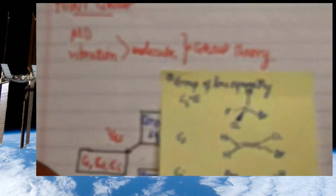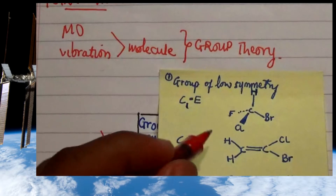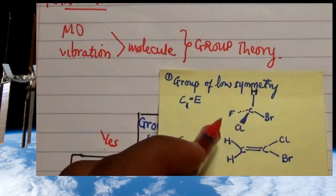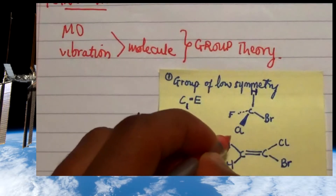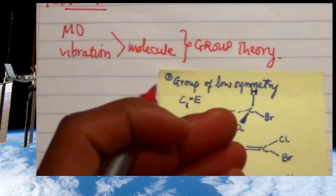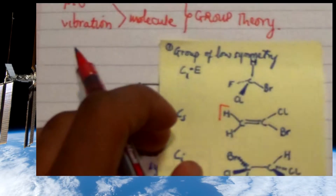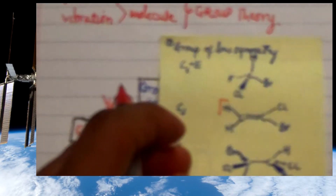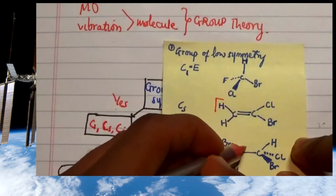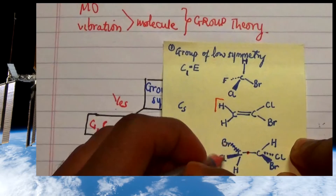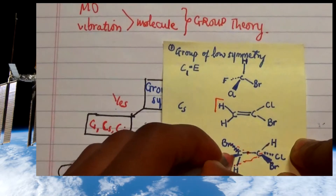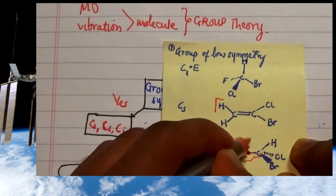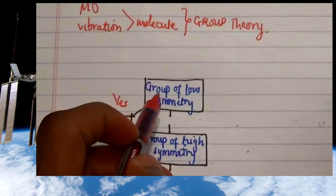An example shown here: for low symmetry, we have a tetrahedral molecule where all the terminal atoms are not identical to each other. For Cs, we have one mirror plane that is parallel to this particular molecule. For Ci, we have an inversion center at the center of this staggered form, where the groups on one side are identical to those on the other, and the inversion maps each atom through to a corresponding position — that point is our i.